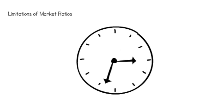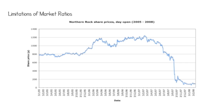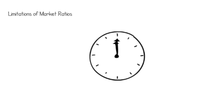Remember, market ratios are based on past performance of a business. While users can use historical data to predict trends, actual results will always differ. Also remember, market ratios such as price earnings ratios and earnings per ordinary share are based on share market prices, which fluctuate greatly on a daily basis. Therefore, market ratios are limited in being reliable for only a limited amount of time.